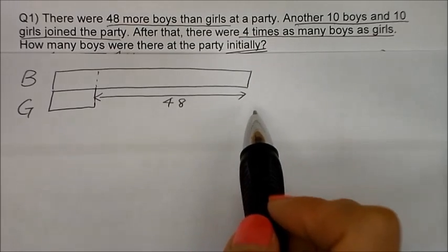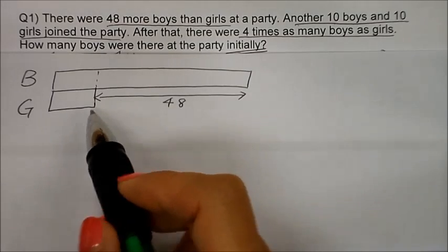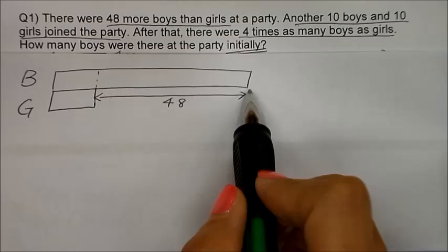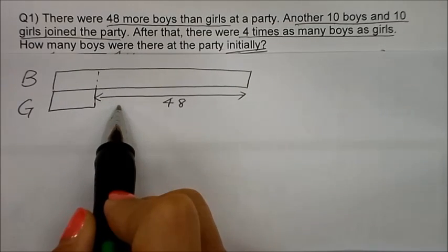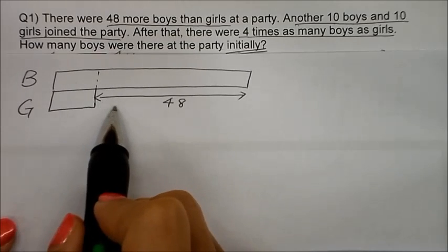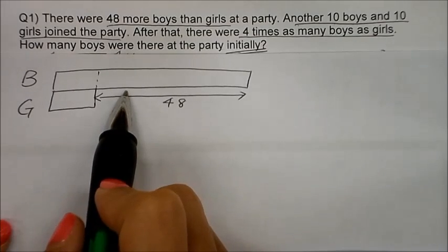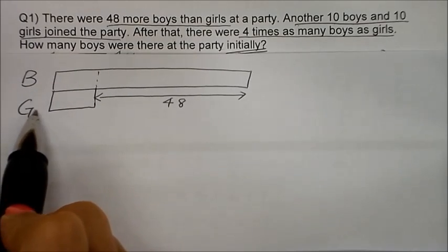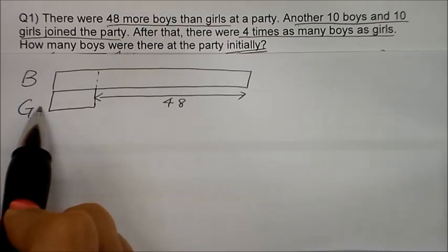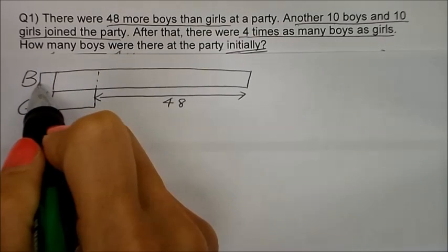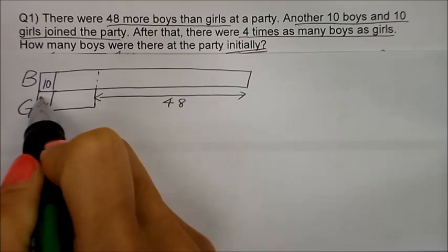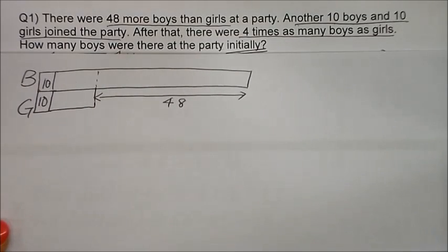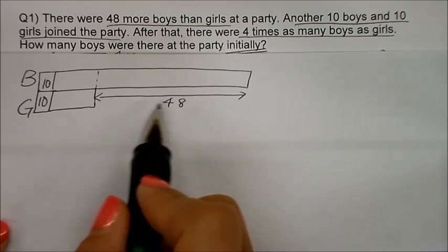I am going to draw ten boys joining the boys and ten girls joining the girls. Instead of drawing the ten at the end of the model, which can make the model messy, I will draw it right in front, since it is the same number of boys and girls joining. So since ten boys and ten girls join the party, I can do it this way — it makes the whole model drawing quite neat.